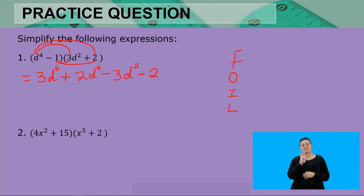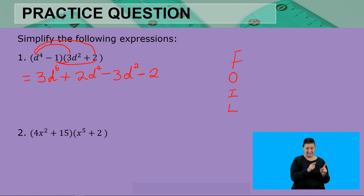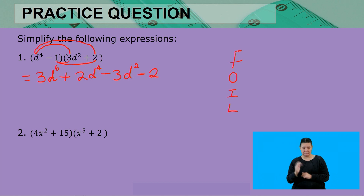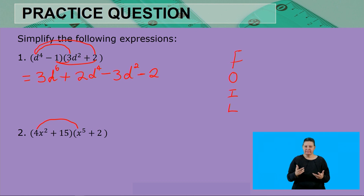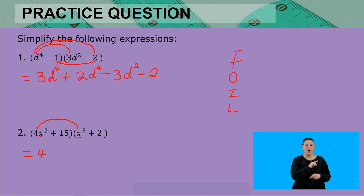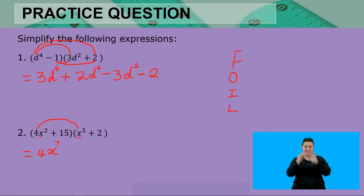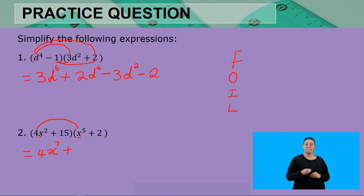The next expression is (4x² + 15)(x⁵ + 2). Multiplying the first terms: 4 × 1 = 4, and x² × x⁵ — same base, add exponents — gives us 4x⁷. Adding next: 4x² × 2, so 4 × 2 = 8, and we keep x² giving 8x².